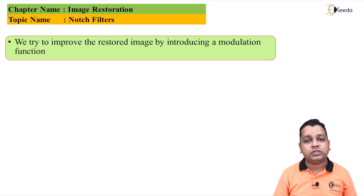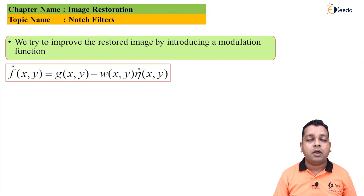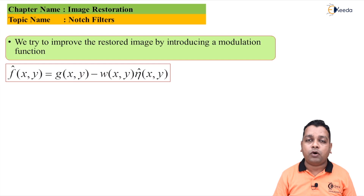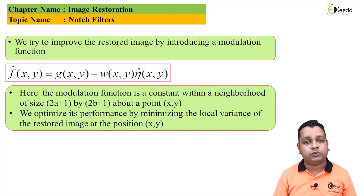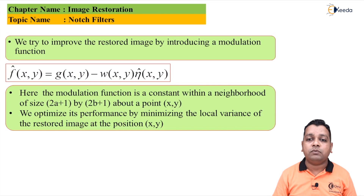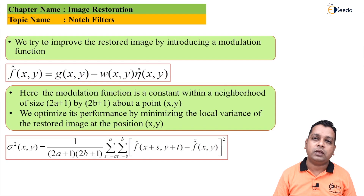To improve the restored image, a modulation function is introduced. The filtered image is represented as f̂(x,y) = g(x,y) − w(x,y) · η̂(x,y), where w(x,y) is the modulation term. This modulation function is essentially a constant within a neighborhood of size (2a+1) × (2b+1) about a point (x,y).